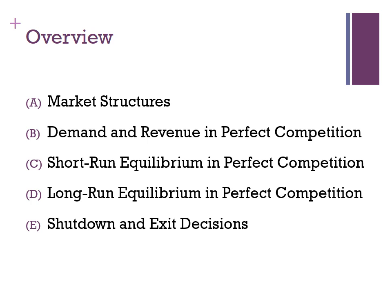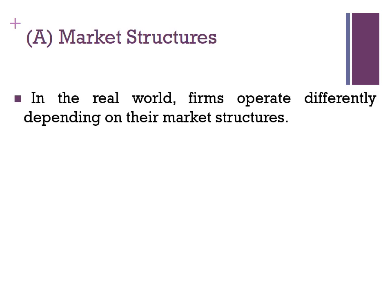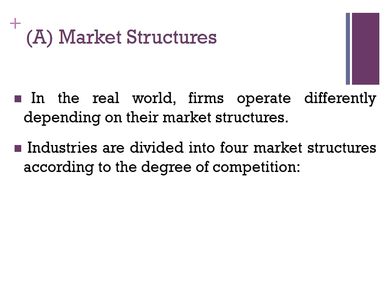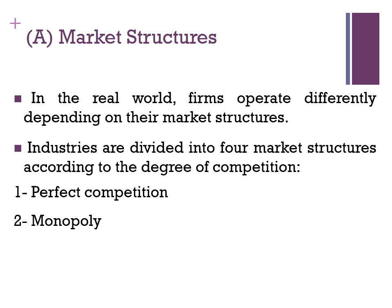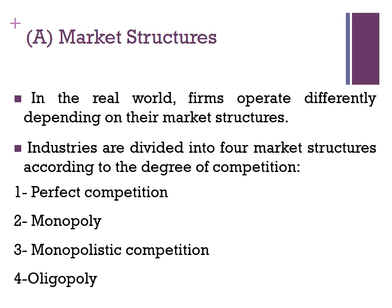Let's start by differentiating between different market structures. In the real world, firms operate differently depending on their market structures. Industries are divided into four market structures according to the degree of competition between different firms: number one, perfect competition; number two, monopoly; number three, monopolistic competition; and finally, number four, oligopoly.